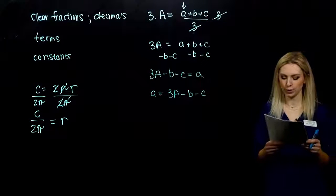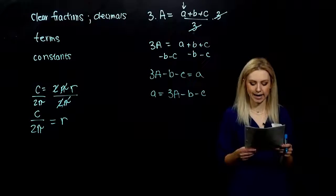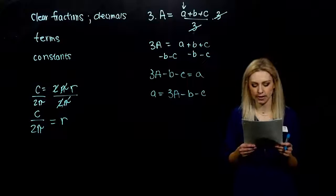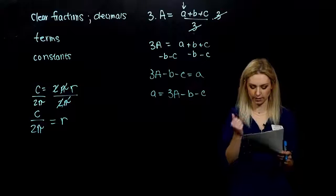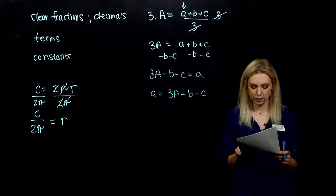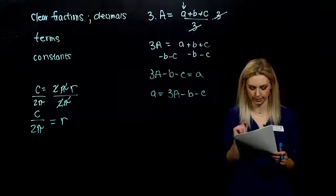So last two for you. Solve for d, the diameter of a circle, in the formula for circumference. Then in the last one, average of four numbers, I want you to solve for c.